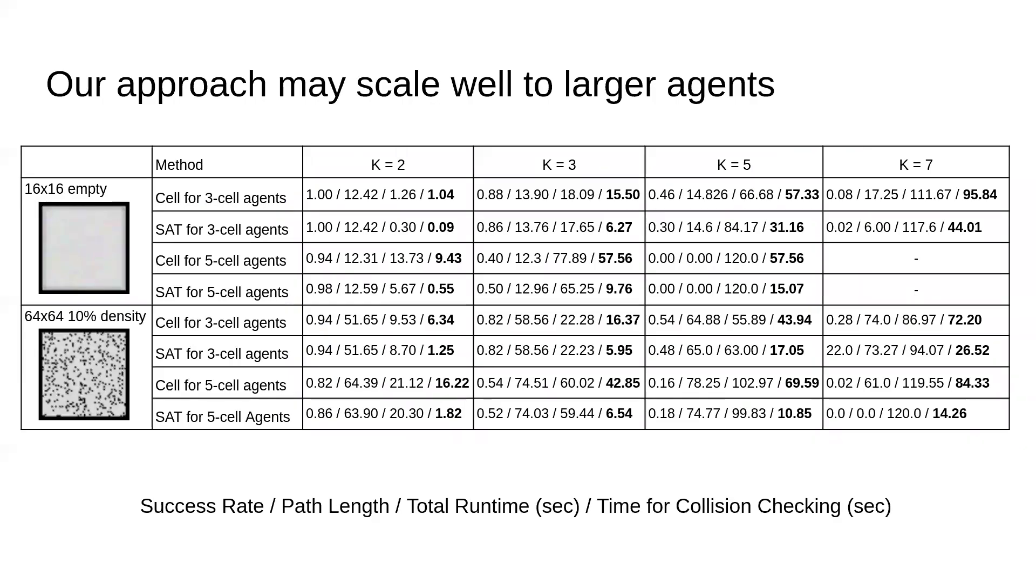We tested these methods in a 16 by 16 empty grid world and a 64 by 64 grid world with 10% obstacle density. We placed a 120 second time limit for planning and tested with sets of 2, 3, 5, and 7 agents with 50 tests per set of agents. For each approach, we tested with agents of length 3 and 5.